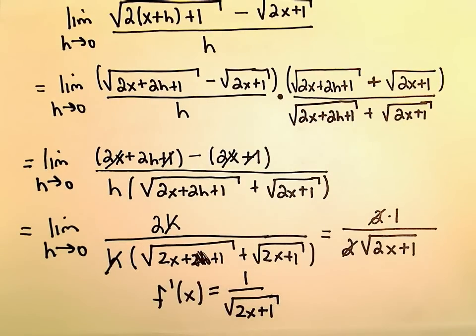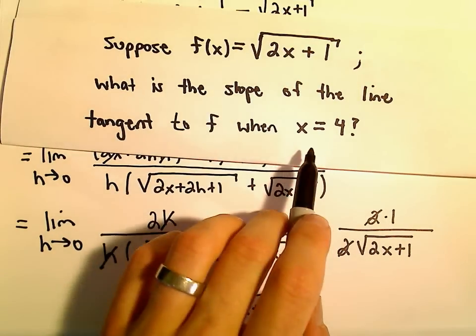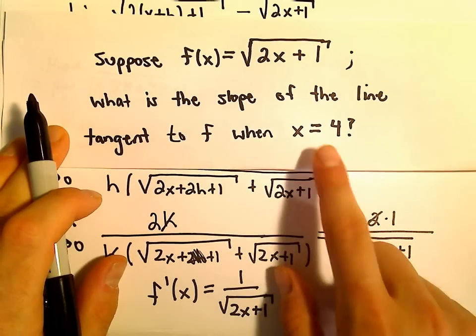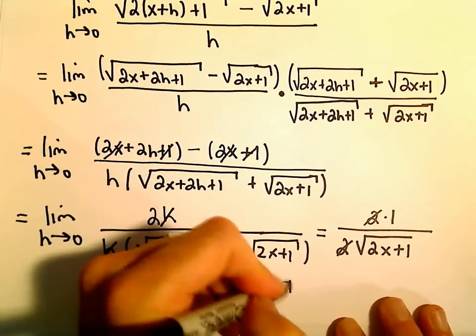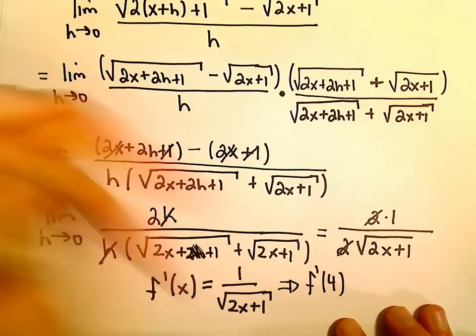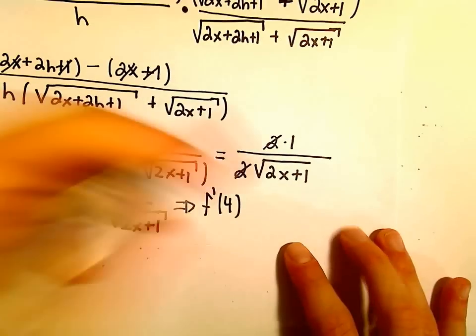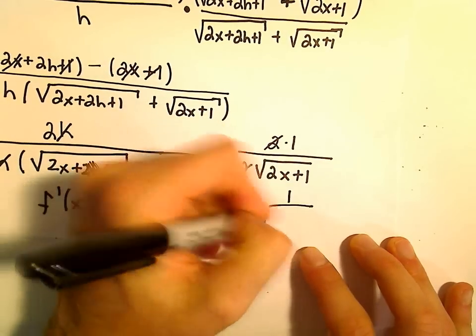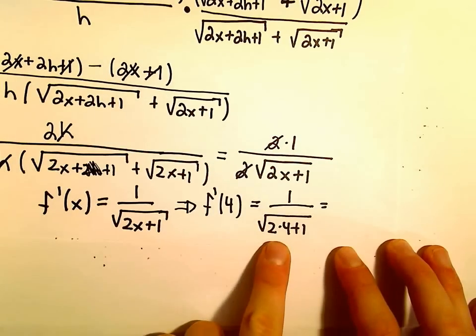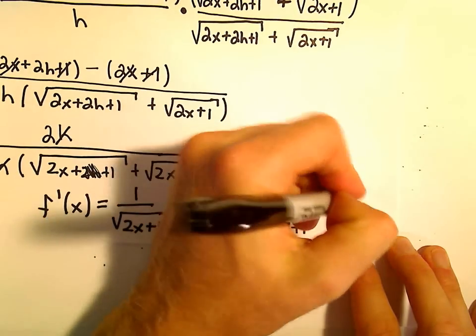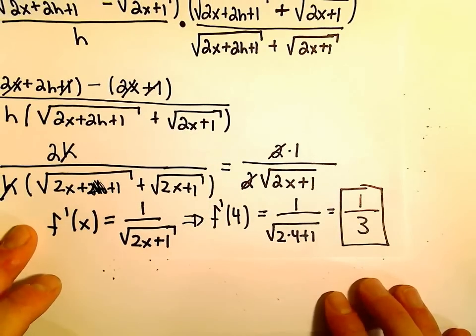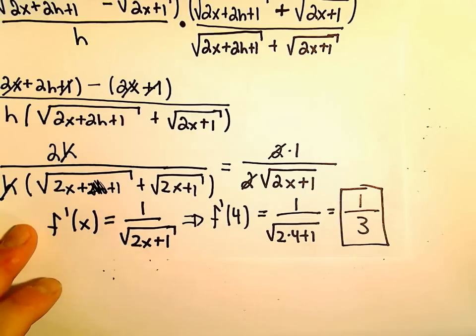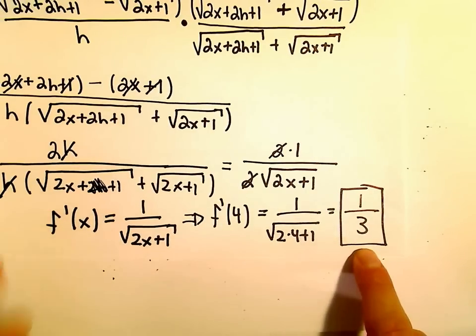The last thing we have to do is find the slope of the tangent line when x equals 4. Now that we have our derivative formula, all we have to do is plug in 4. We get 1 over the square root of 2 times 4 plus 1. Well, 2 times 4 is 8, plus 1 is 9, so we get 1 over the square root of 9, which is going to be 1 third. The slope of the tangent line at x equals 4 is positive 1 third.